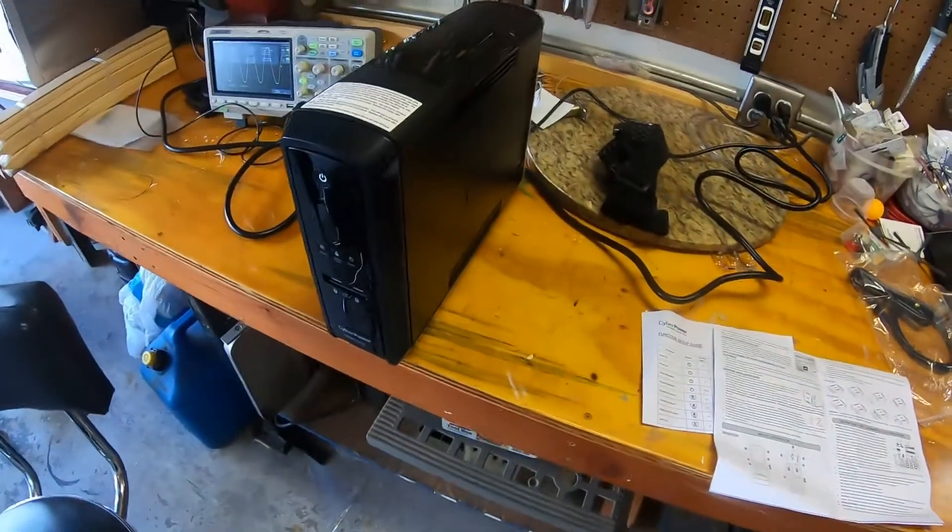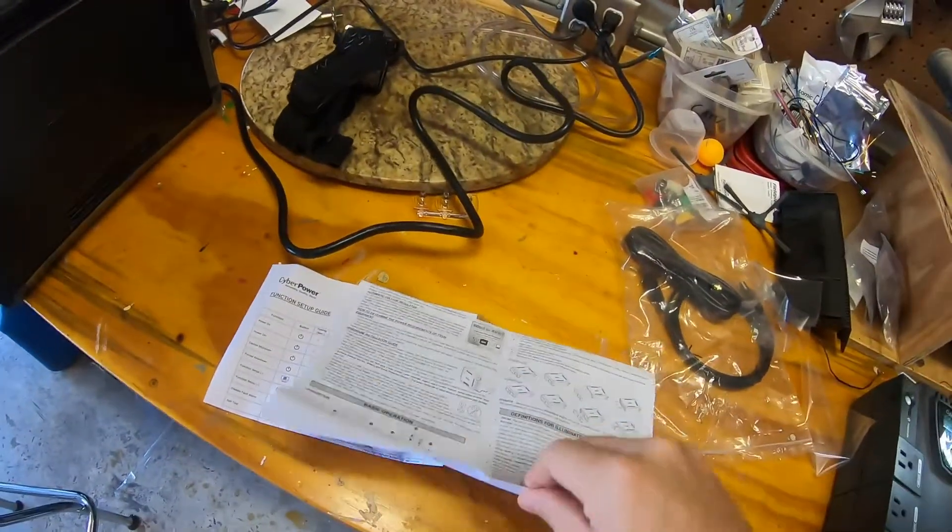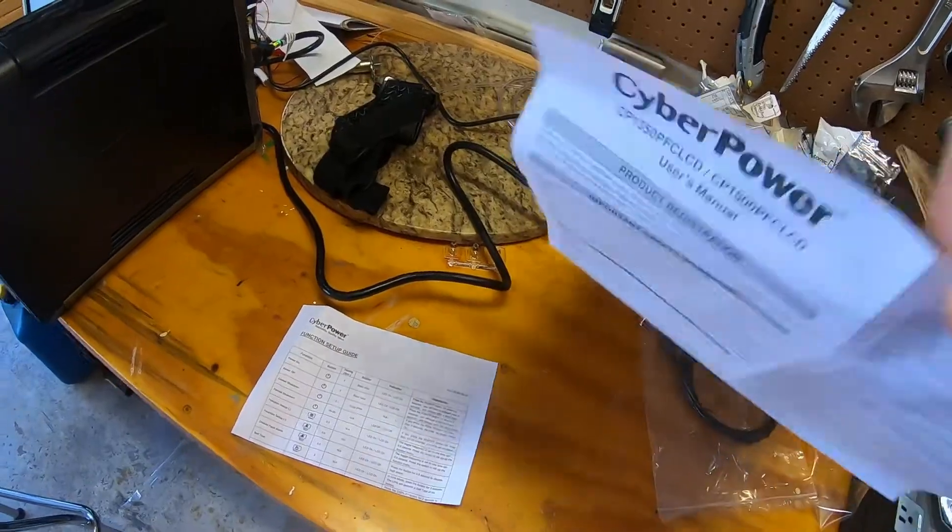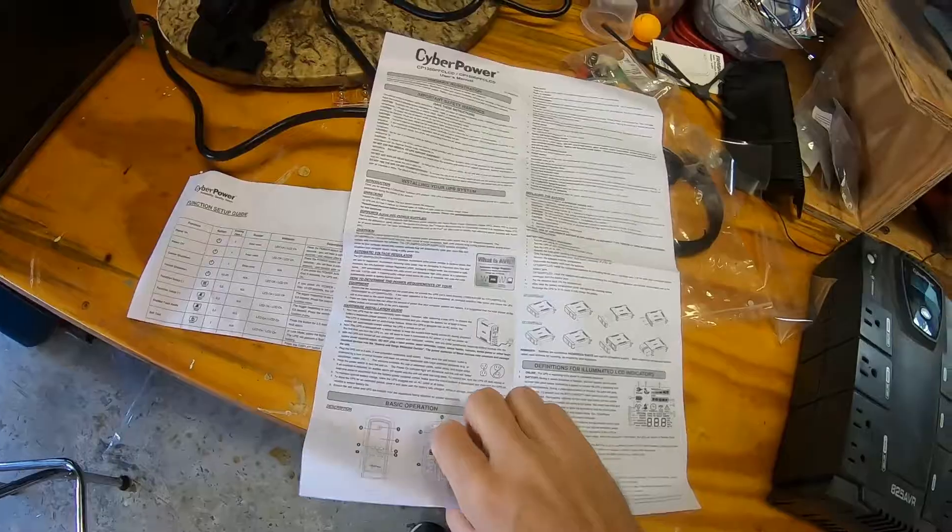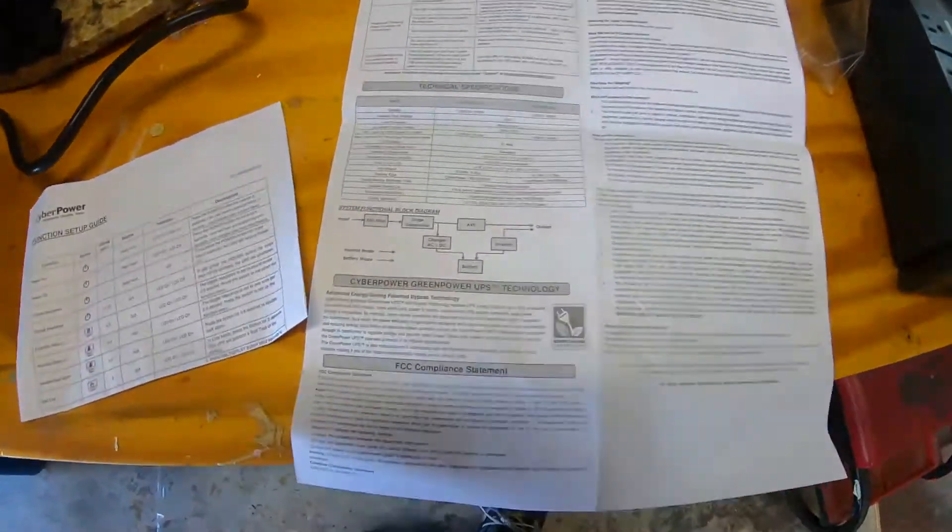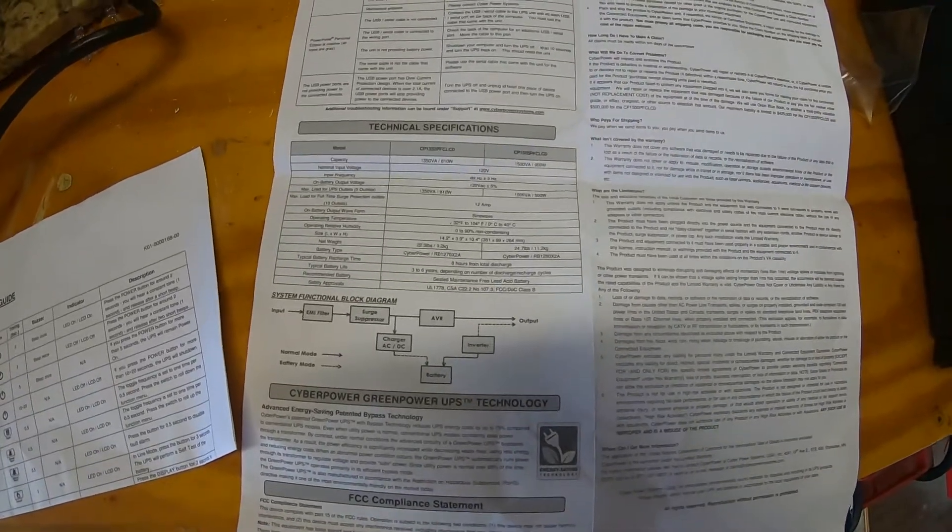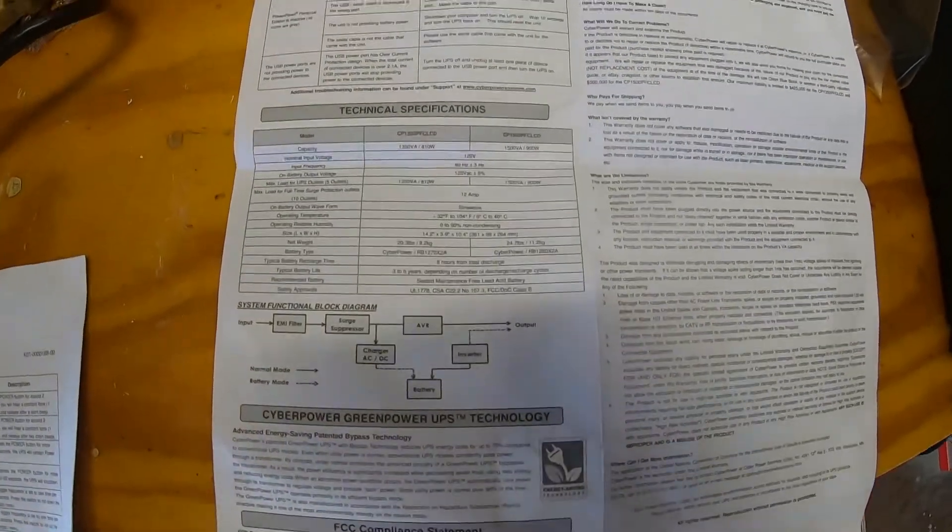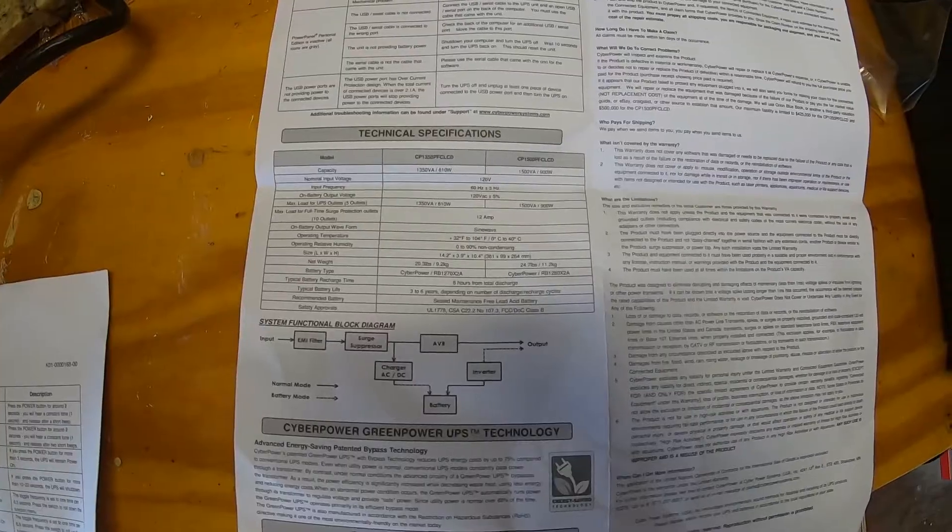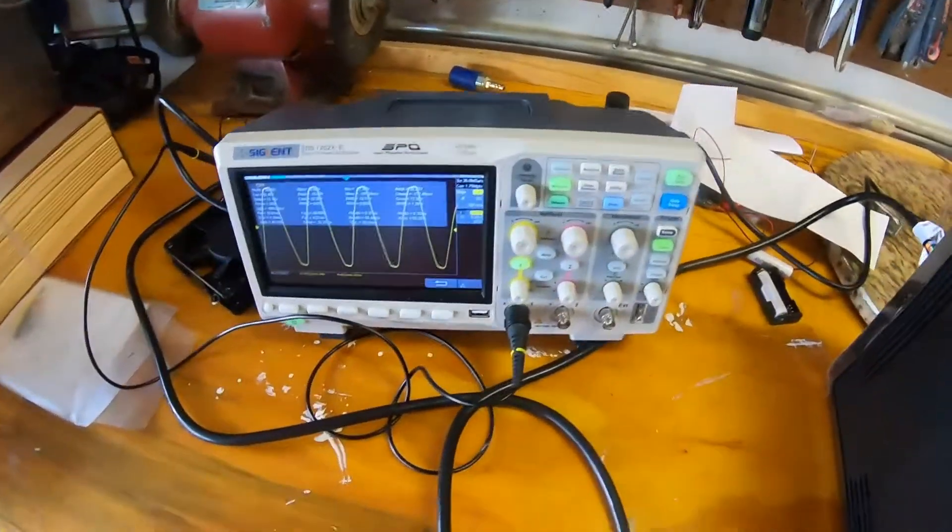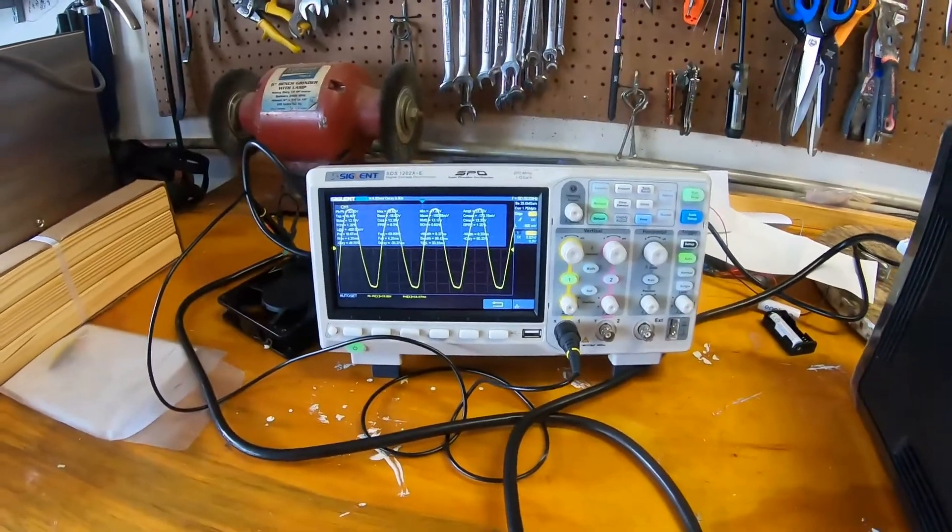Interesting. Okay. So it does appear that I was wrong and it does do some conditioning of the utility power. Now if there are frequency variations in the utility power. Didn't say it would do anything about that. So if for some reason the total harmonic distortion of the utility power is high. Don't know what this would do unless it was just a voltage problem. But again pretty cool stuff. I mean this thing was 200 bucks and that's pretty impressive.